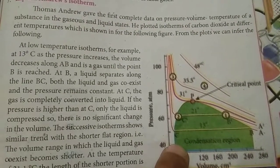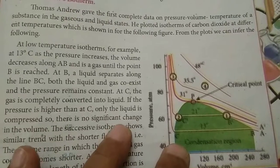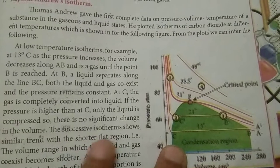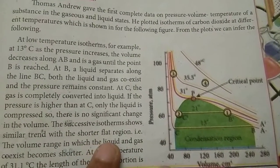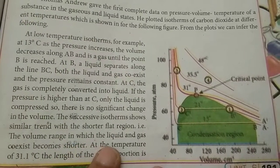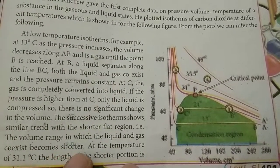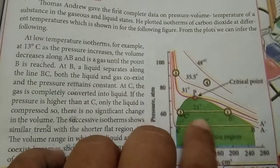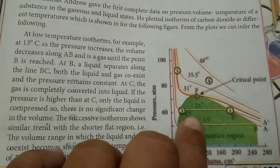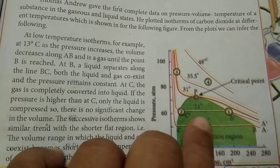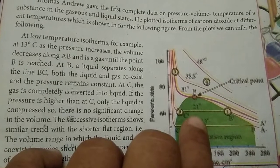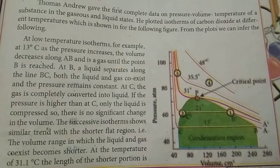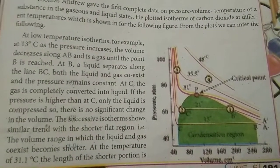The successive isotherms show a similar trend with the flat region becoming shorter. That is, the volume range in which liquid and gas coexist becomes shorter. As the temperature increases, the flat portion eventually vanishes.